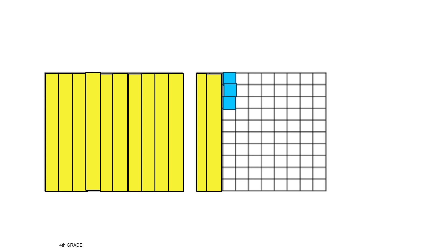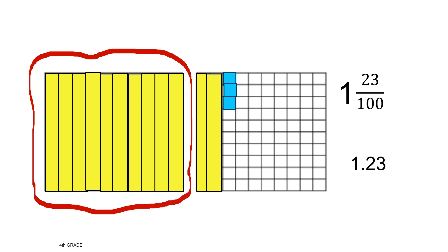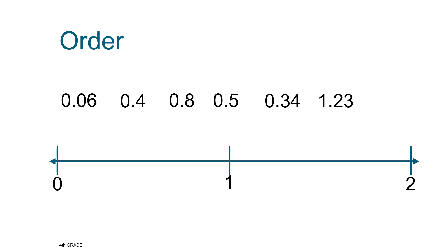Write the fraction and decimal for the amount that is colored. This picture shows 1 and 23 hundredths. Where is the one whole? Because this whole square is colored, that is the one whole. Where is the 23 hundredths? Here's 10 hundredths, 20 hundredths, and 3 more hundredths.